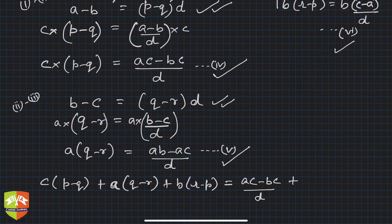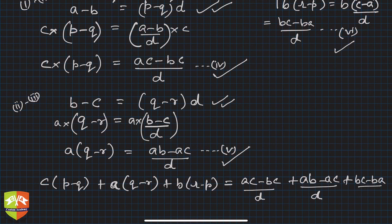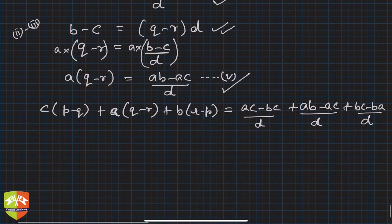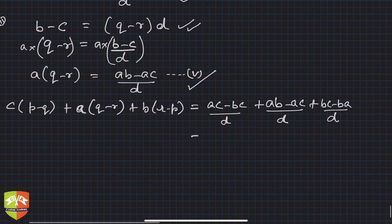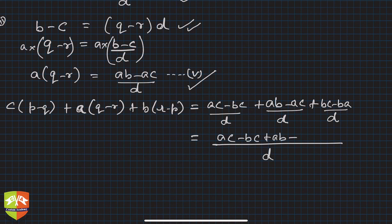...c minus bc minus ba upon d. So plus (bc - ba)/d. And my friend, if you see this result, d is a common denominator. And let's write: ac - bc + ab - ac + bc. Correct? So this ba I have written as ab here. And you see all of them are getting cancelled.